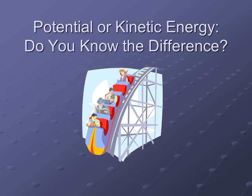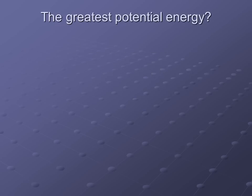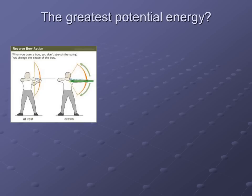So if we start looking at potential and kinetic energy and we know the difference, there are a lot of different ways we can look at this. Let's look at potential energy again and find the greatest potential energy. In our notes, if we have a bow and arrow where the guy is just holding on to the arrow — not much is happening — and then the other guy is drawing the bow and arrow back: which one has the greatest potential energy? Potential energy is stored up energy, and both of these have stored up energy. The bow and arrow that is drawn is correct — it has more energy stored up because he's pulled it back further.